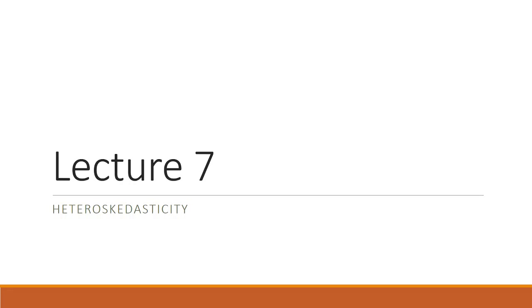Heteroscedasticity — it is an incredible mouthful. We're going to talk about what it is, what problem it causes, how we solve it, and how we figure out whether or not we have it. We're also going to start with a review of F-tests — when we would use that test and how to actually calculate it. Before, we did it conceptually and in Stata, but today we're going to do it by hand. I'm going to show you how to produce an F-statistic and how to test a hypothesis using the F-test. Then we're going to get into heteroscedasticity, and as usual, I will demo everything using Stata.